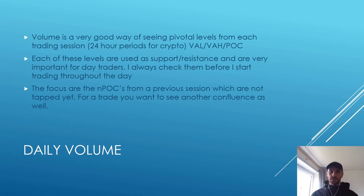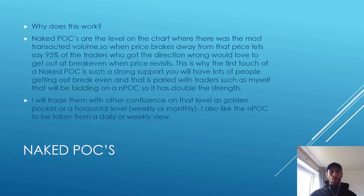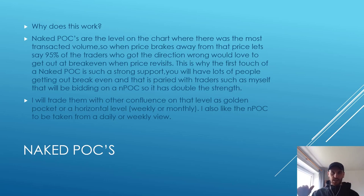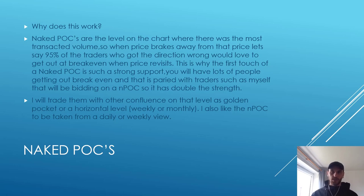For a trade, you really want to see another confluence as well. Now, why do naked point of controls work? Naked point of controls are an exact level where there is the most transacted volume. Let's say you're in a range and price breaks away from whatever is the most transacted volume. If somebody got it wrong — let's say 95% of traders who got in the wrong direction — they would love to get out at break-even when price revisits this level. It's calculated by math, so it's very accurate. This is why the first touch of a naked point of control is such strong support or resistance — you have a lot of people getting out at break-even.